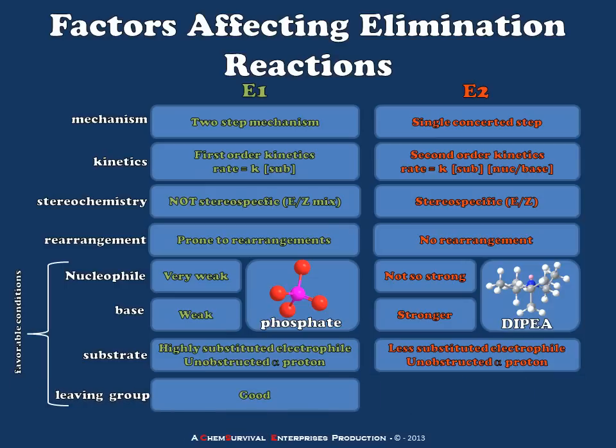And finally, the leaving groups. In the case of E1, we want a good leaving group to promote carbocation formation, while in the case of E2, a poor leaving group is better because that will hang on until the alpha proton is abstracted. So this gives you a rough idea of how the E1 and E2 mechanisms occur and what sort of conditions and reagents we can use to promote one or the other to take place. And that's all for now — we'll see you next time.